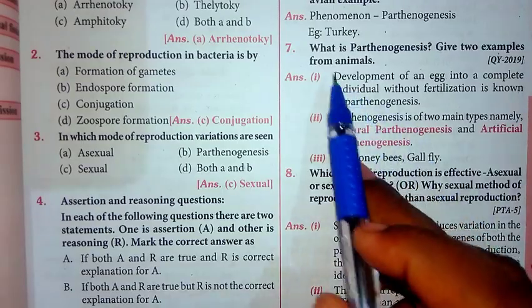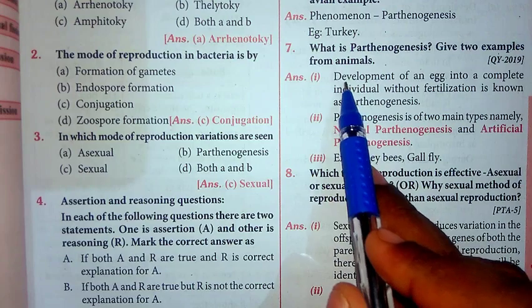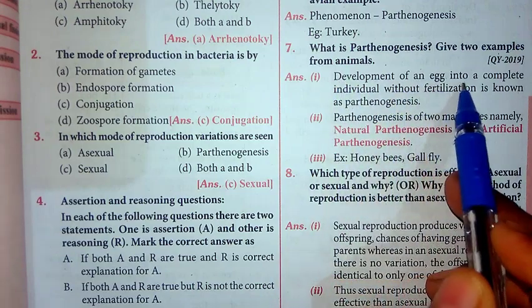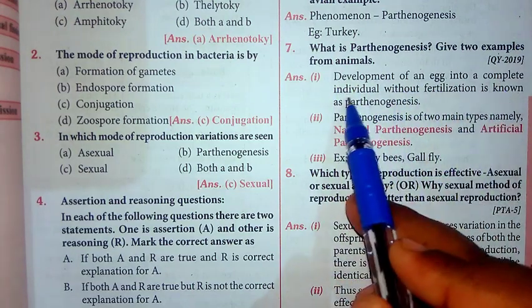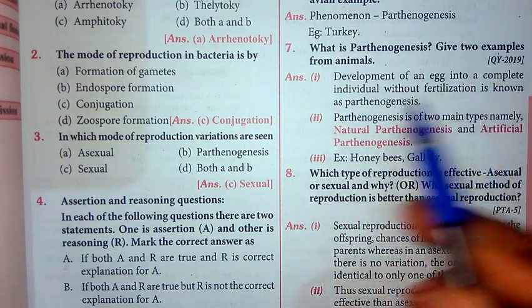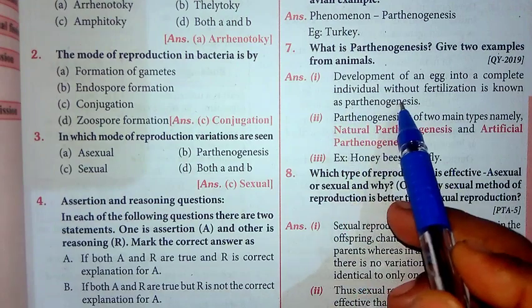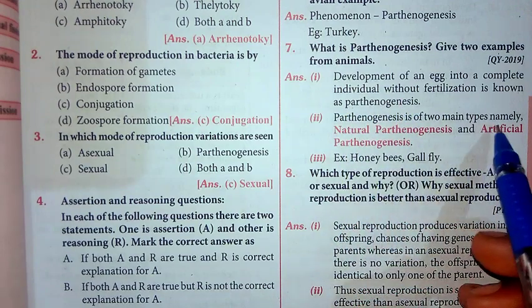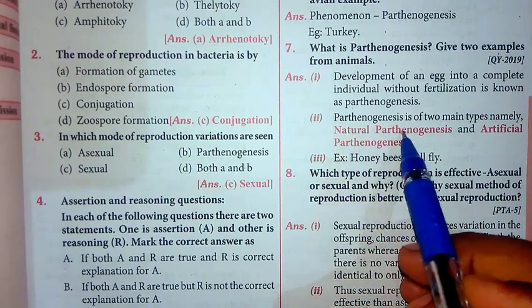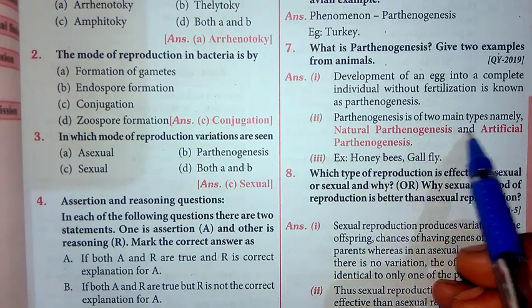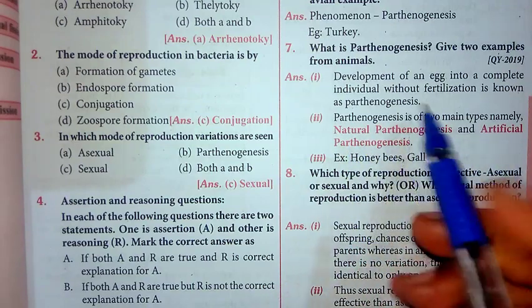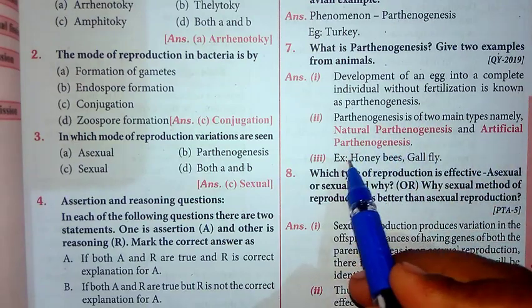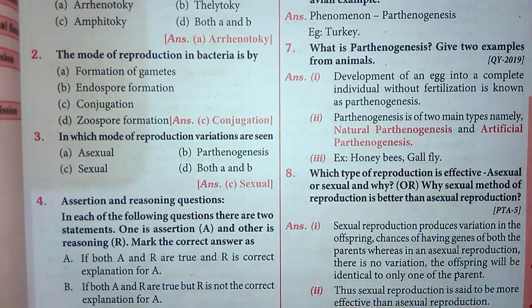For the fifth question: development of an egg into a complete individual without fertilization is known as parthenogenesis. Parthenogenesis is of two main types — natural parthenogenesis and artificial parthenogenesis. Examples include honey bees and gall fly. That completes Part B.